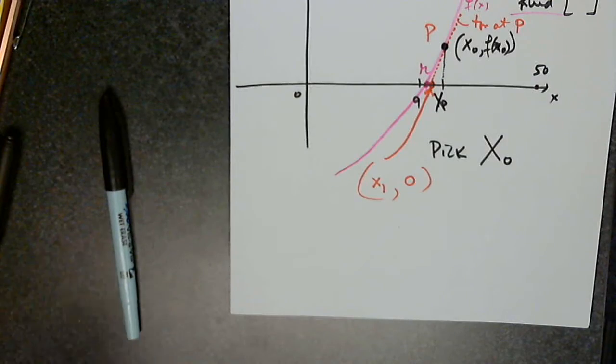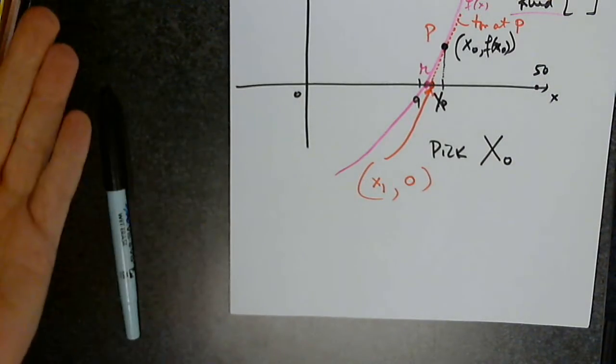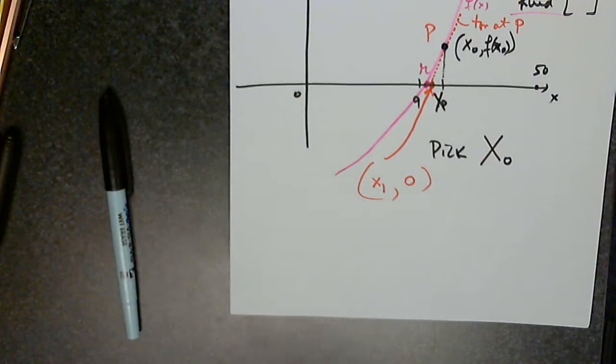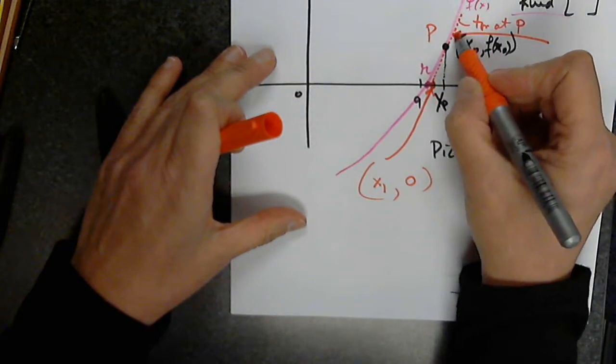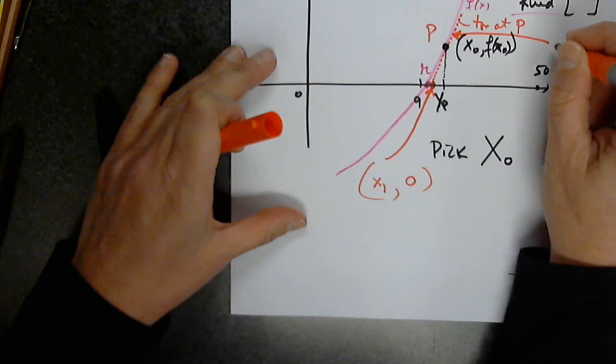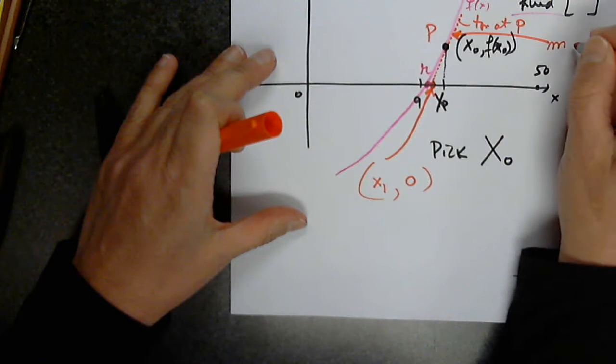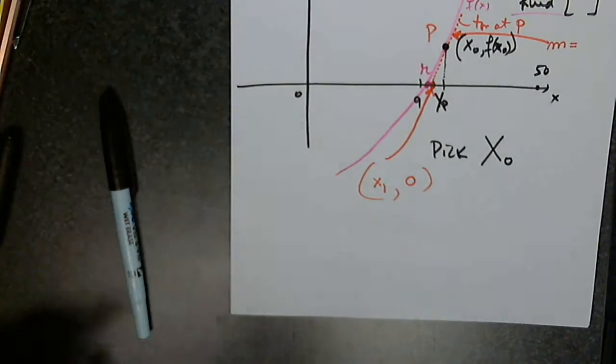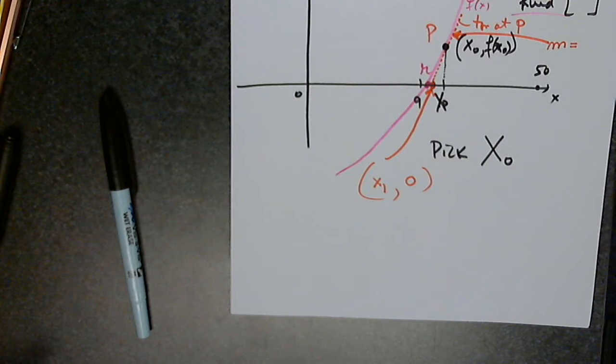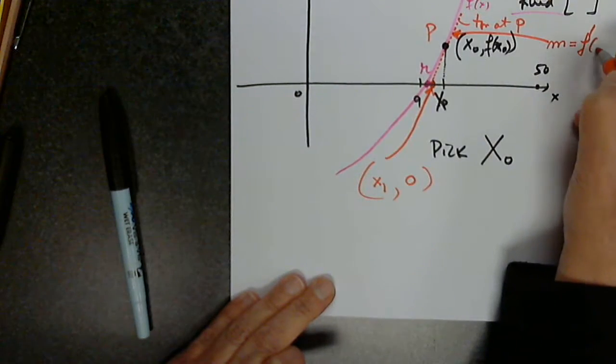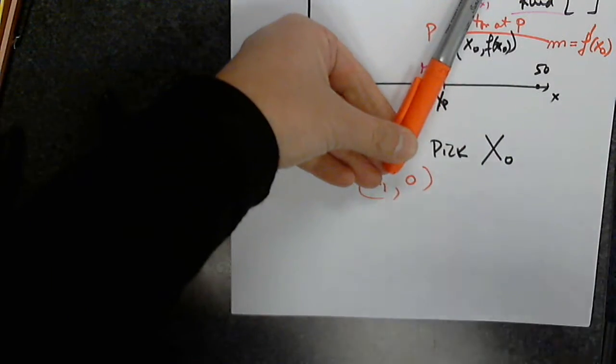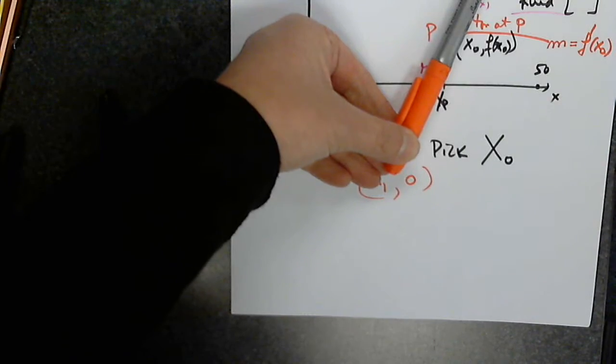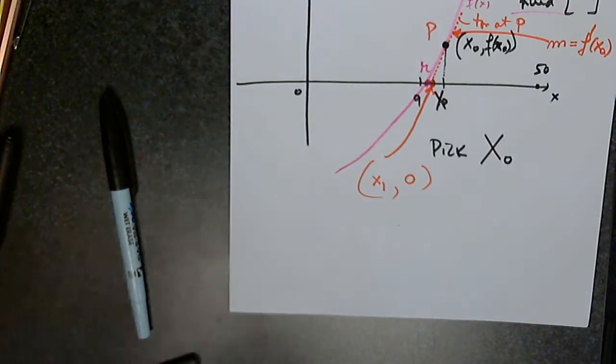I can give it any name I want and I know it's on the x-axis so that y has to be 0. Very good. Can anyone give us the slope of this line? Do you agree that it's f prime of x0? Yes, because it's at P and the slope at P will be m equals f prime of x0.